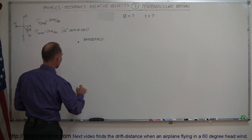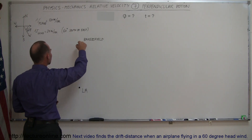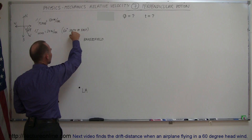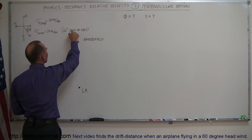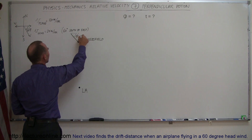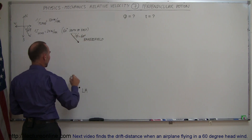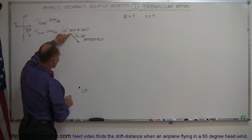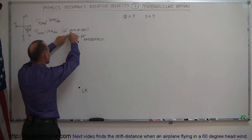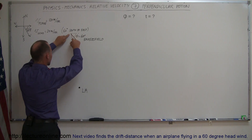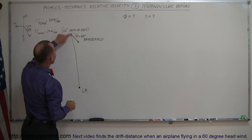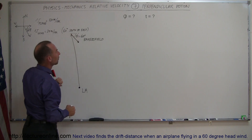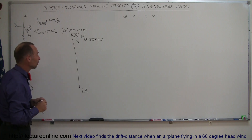Since the wind is going to be blowing in that direction — at an angle of 60 degrees below the horizontal, so theta equals 60 degrees — the pilot will have to aim for a spot to the west, in such a way that when he gets there, the wind will have blown him right to Bakersfield and he'll be in the right location.